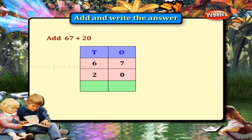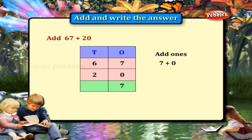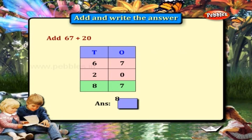67 plus 20. Add the 1's place: 7 plus 0 is equal to 7. Add the 10's place: 6 plus 2 is equal to 8. The answer is 87.